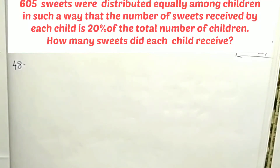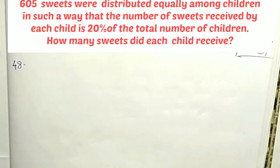605 sweets were distributed equally among children in such a way that the number of sweets received by each child is 20% of the total number of children. How many sweets did each child receive?